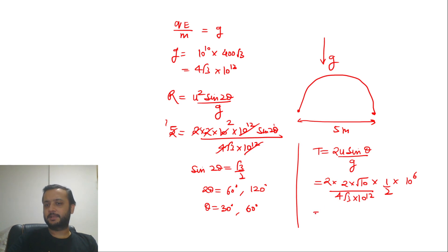Time ko microseconds me nikalna hai, so to get it in microseconds we multiply by 10⁶ and write microseconds here. So 10⁶, 10⁶ and 10¹² cancel ho jayega, this 4, 2, and 2 cancel. Basically we are getting root 10 by 3, root 10 by 3, and this 2 goes inside making 12.